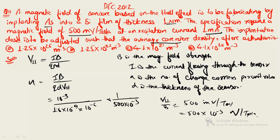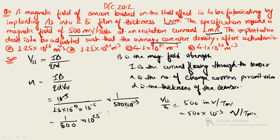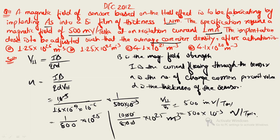Substituting the values, all units cancel. We get 1 divided by (1.6 × 500), giving 1 divided by 800, multiplied by 10²⁵, which equals 1.25 × 10²² meter⁻³. The correct option is option B. If you know the formula, the calculation is straightforward.